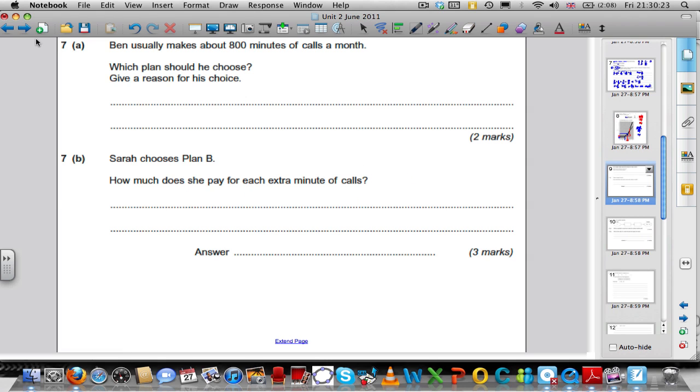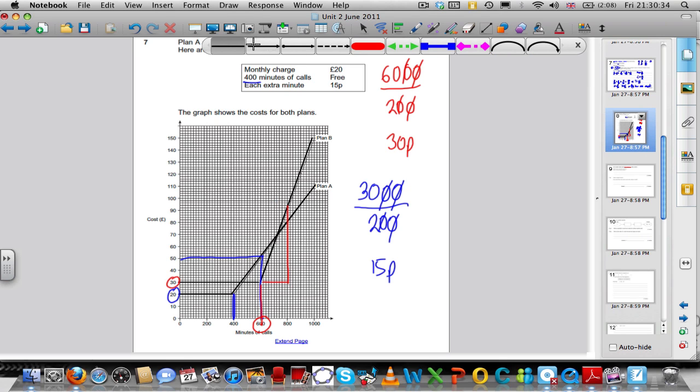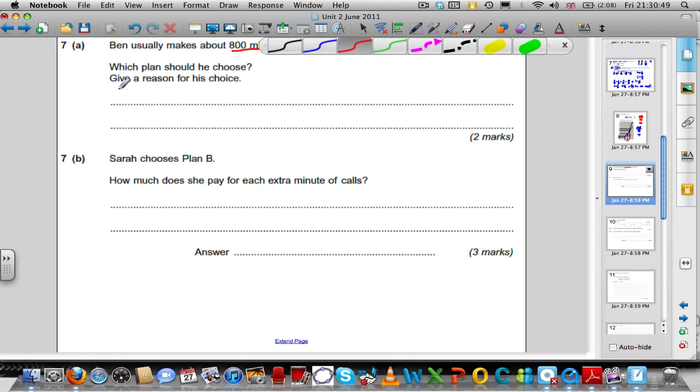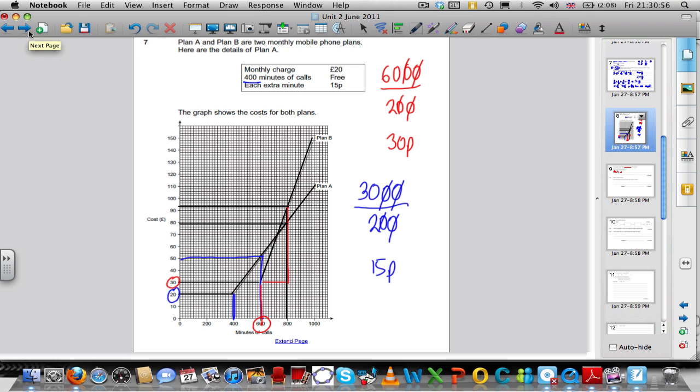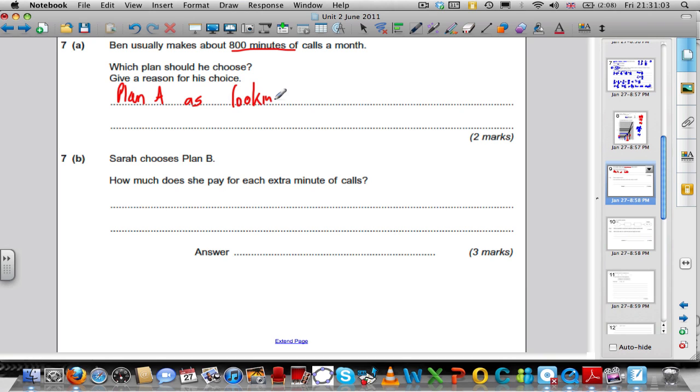I'm going to go to the questions now, have a look at the questions. It says, Ben makes 800 minutes of calls a month, which plans should he choose? Well, if he's making 800 calls a month, all you do is go to 800 on your graph, go up. You can clearly see that plan A is cheaper than plan B, so therefore he should do plan A.